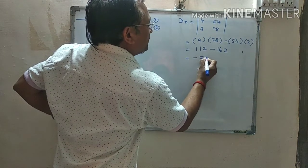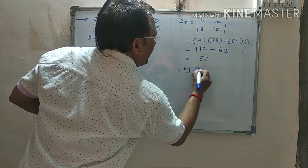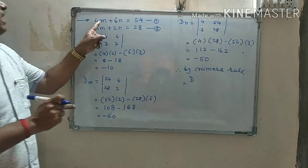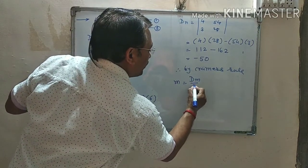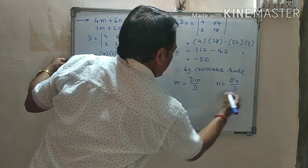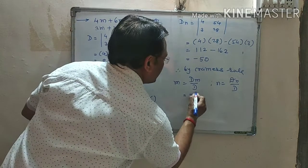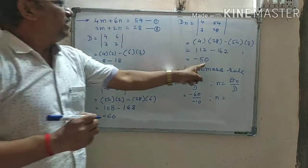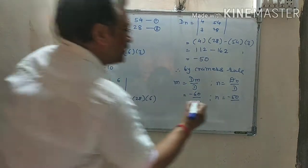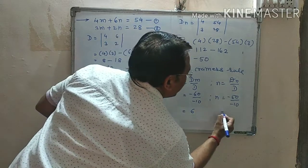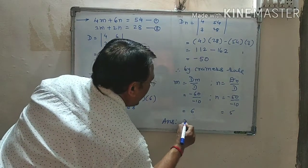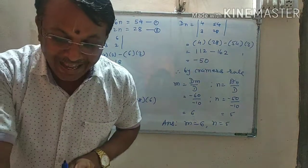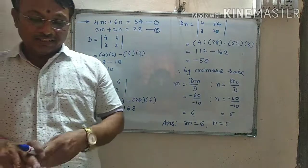DN is equal to, drop N's coefficients, put M's coefficients 4 and 3, and constants 54 and 28. It is equal to cross multiplication: 4 into 28 minus 54 into 3. It is equal to 4 into 28 is 112 minus 3 into 54 is 162. 112 minus 162 is minus 50. So by Cramer's Rule, M is equal to DM upon D: minus 60 upon minus 10. N is equal to DN upon D: minus 50 upon minus 10. It is equal to 6 and it is equal to 5. Therefore the answer: M's value is 6 and N's value is 5. In this way we saw two examples.